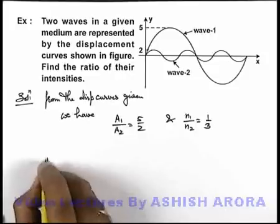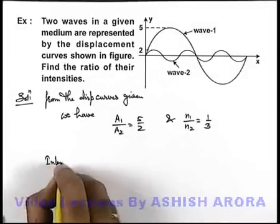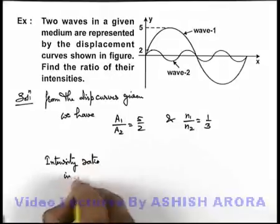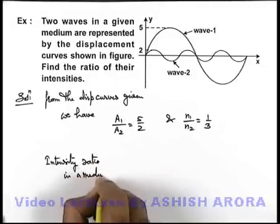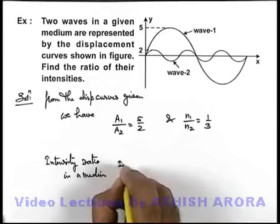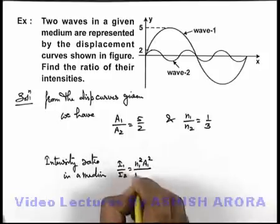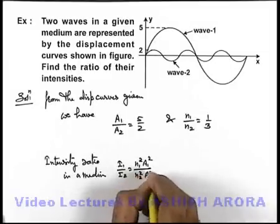Now we can simply write intensity ratio in a medium. In a given medium can be given as I1 by I2 is equal to n1 square a1 square by n2 square a2 square.